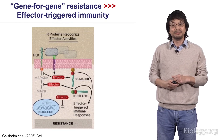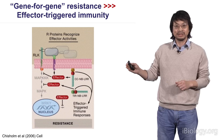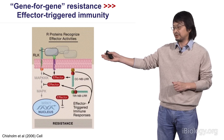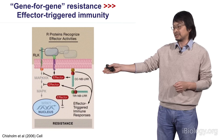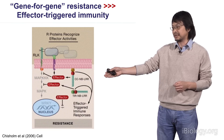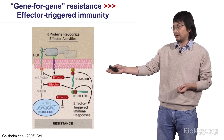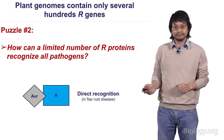So gene-for-gene resistance became effector-triggered immunity. You can see that bacteria are injecting these effectors into the plant cell, and they are being recognized by immune receptors that contain either a coiled-coil domain, a TIR domain, NB, or LRR proteins. It's called effector-triggered immunity.